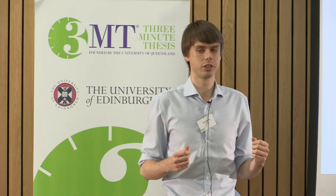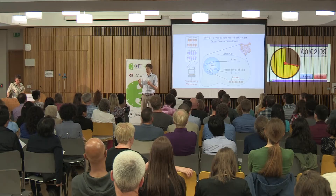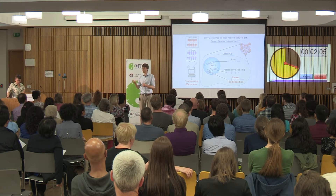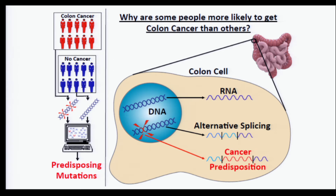My PhD aims to find this out, because understanding the mechanism of predisposition will allow us to do more effective screening of people at high risk of colon cancer and may allow us to design better therapies in the future. The main hypothesis I am testing is that these mistakes are causing errors in alternative splicing.